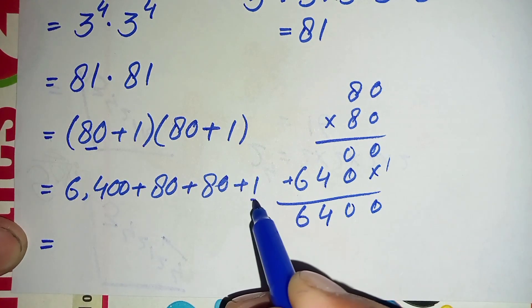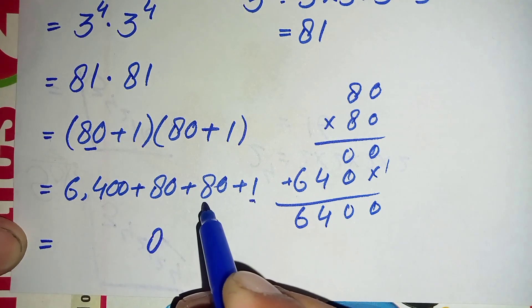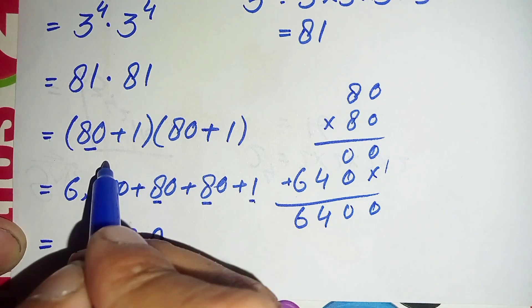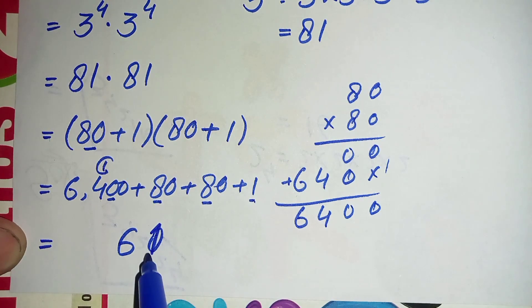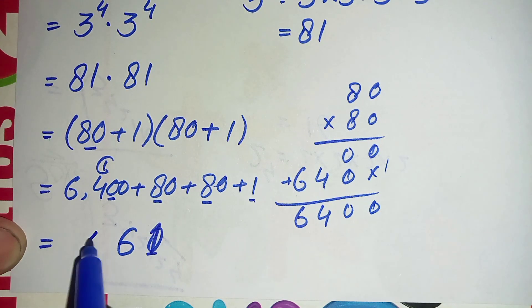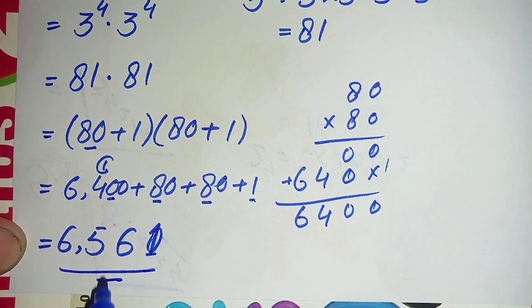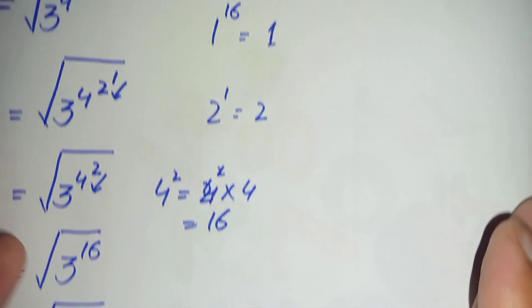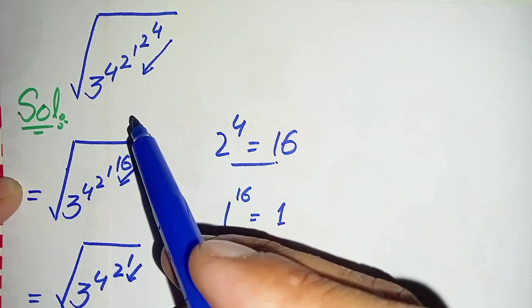Now we add these four numbers: 6400 plus 80 plus 80 plus 1. Starting from the ones position: 1 plus 0 is 1; in the tens: 8 plus 8 is 16, write 6 carry 1; in the hundreds: 4 plus 1 is 5; thousands: 6. So 81 times 81 is 6561, which is our final answer for this square root math problem.